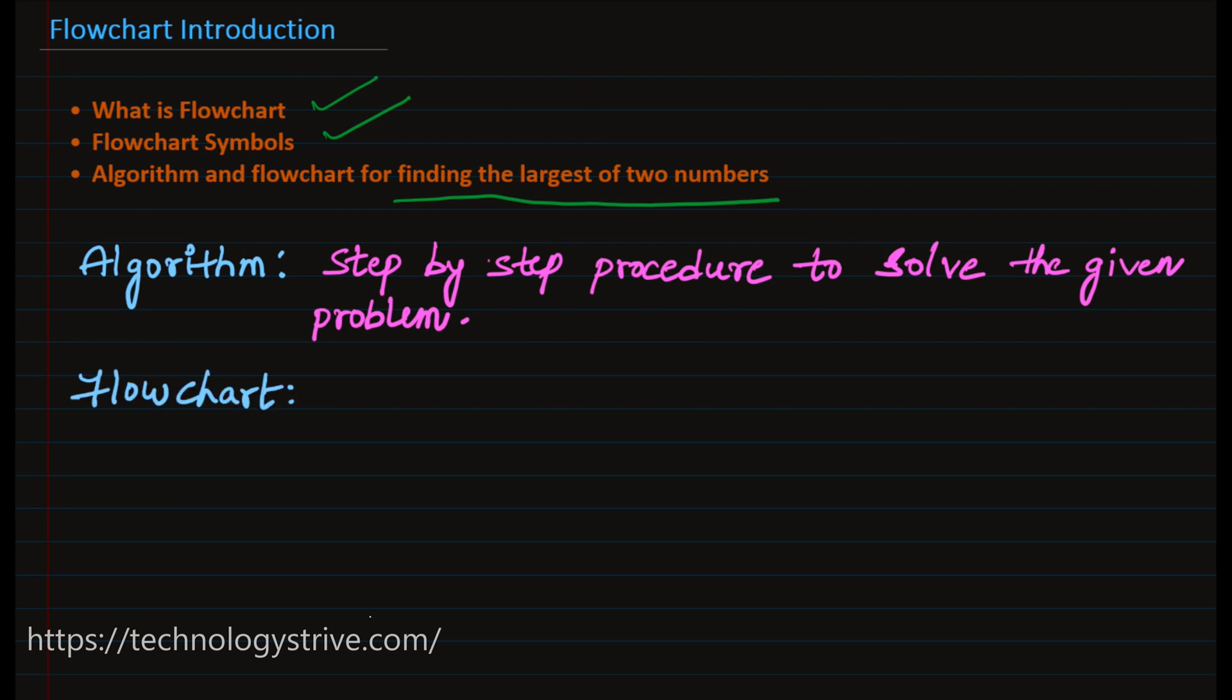That is what flowchart is. Flowchart is a diagrammatic representation of an algorithm. Whatever we define in algorithm, everything we represent using some symbols which is very easy to understand by programmers during the coding phase.